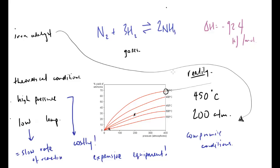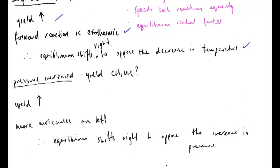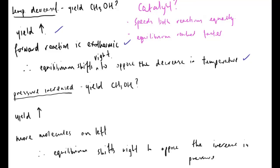That's the entire equilibria topic. The key thing is making sure you learn these answers - not just understanding, but also wording your answers correctly. The final line on each answer is particularly important: saying that the equilibrium shifts in a particular direction to oppose the increase or decrease in temperature or pressure. That's very very important. Any comments or problems, please put them in the comments below.